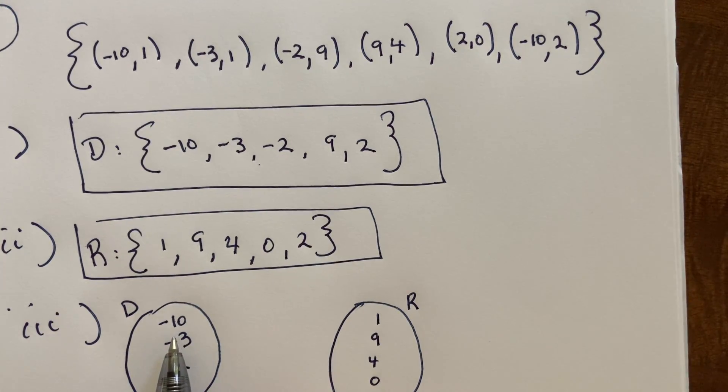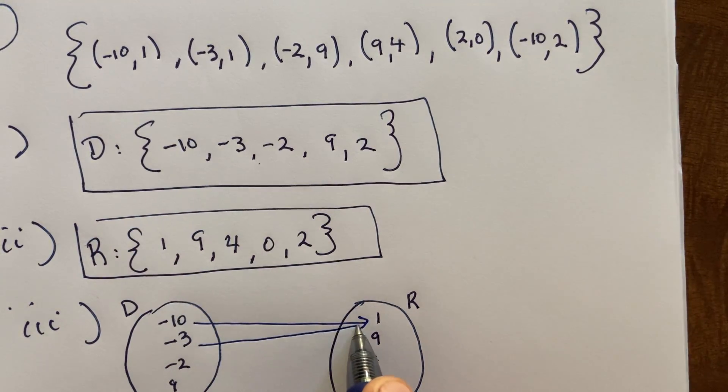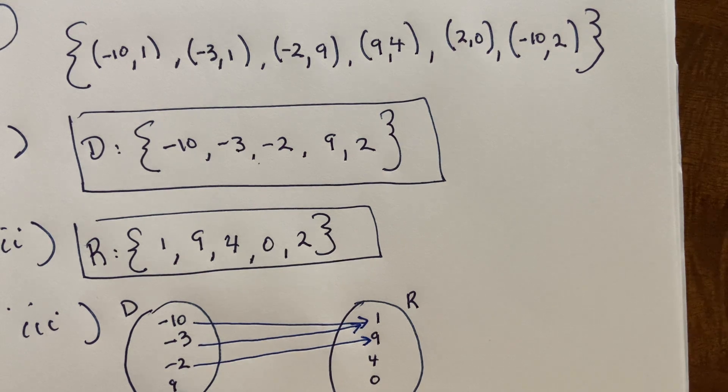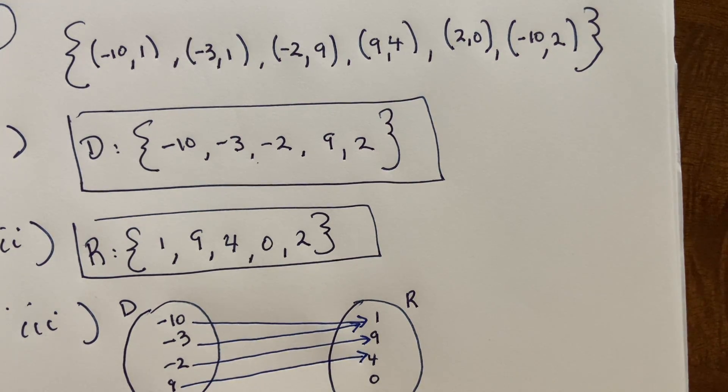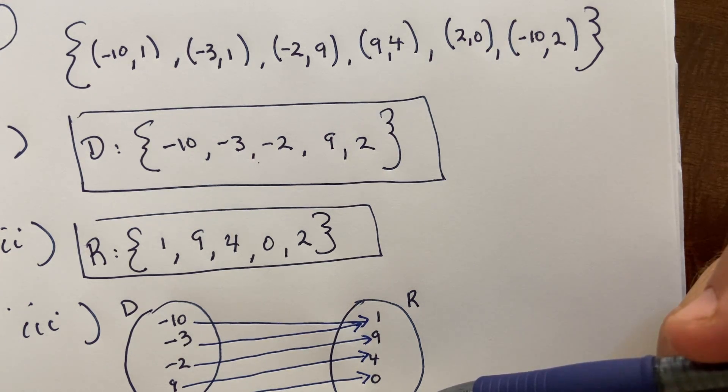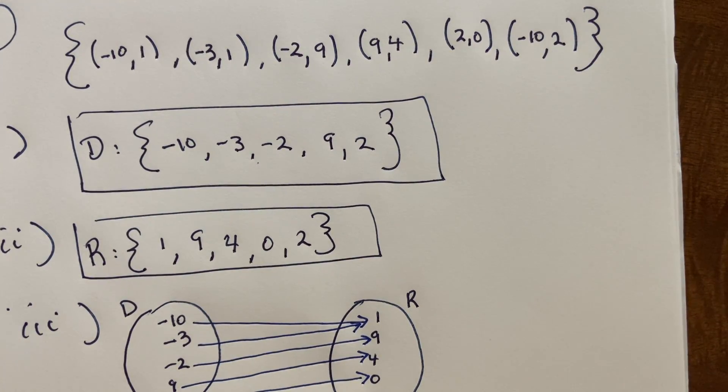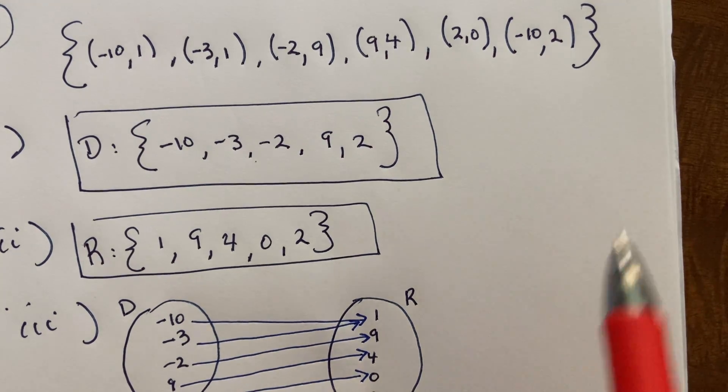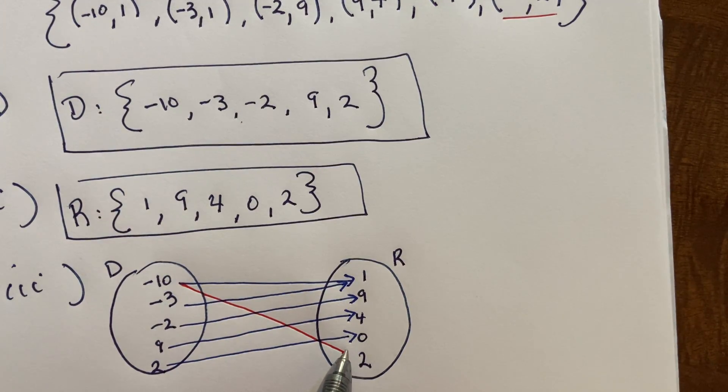And I'll go ahead and write the correspondences based on the ordered pairs. So negative ten goes to one, negative three goes to one, negative two goes to nine, nine goes to four, two goes to zero. And let's see, yeah, looks like that is it. Negative ten actually also goes to two, so let me not forget about it.